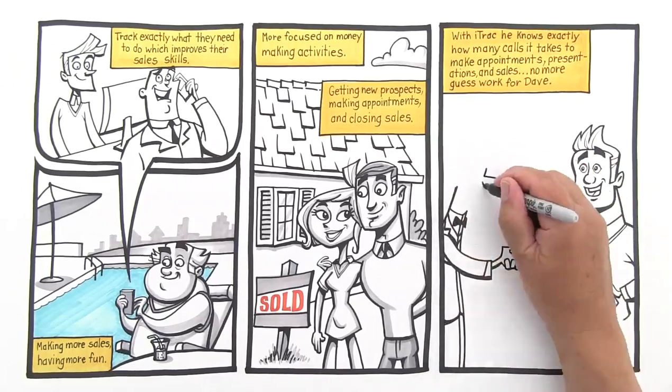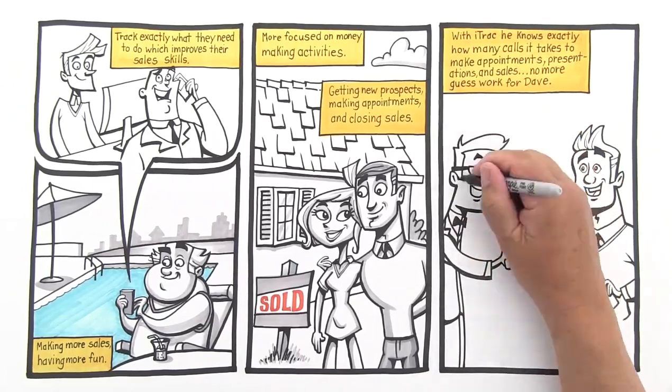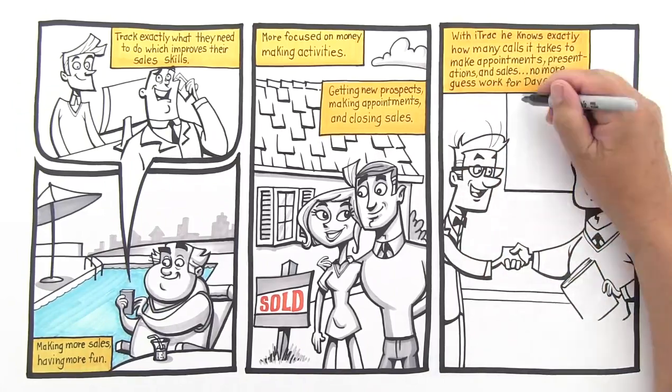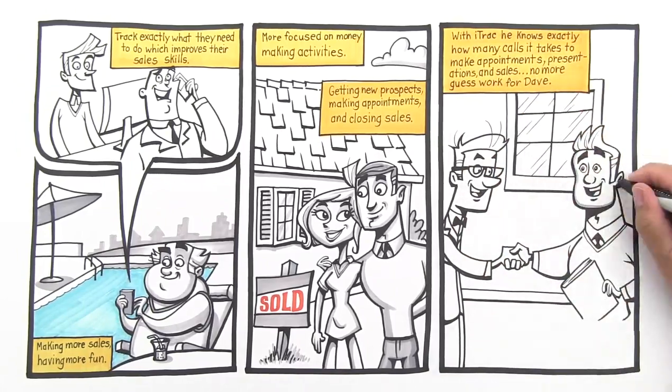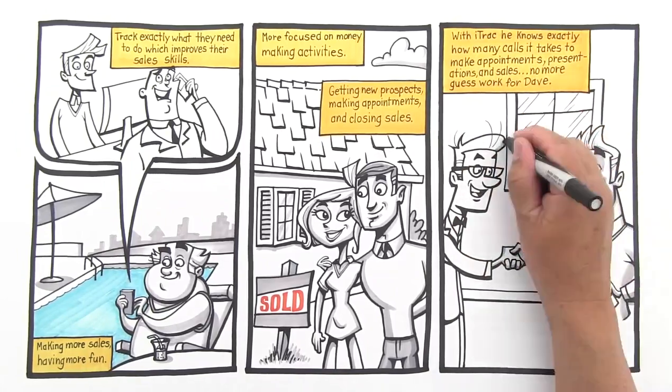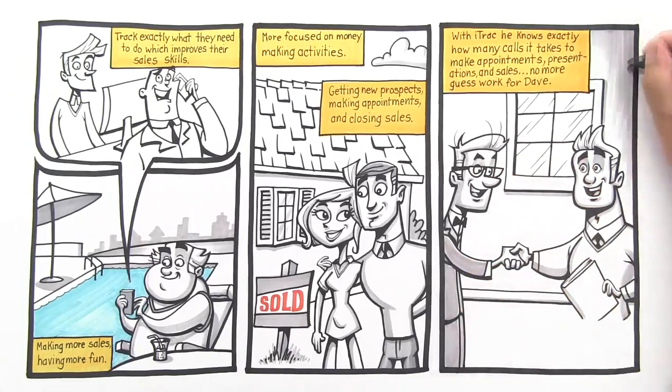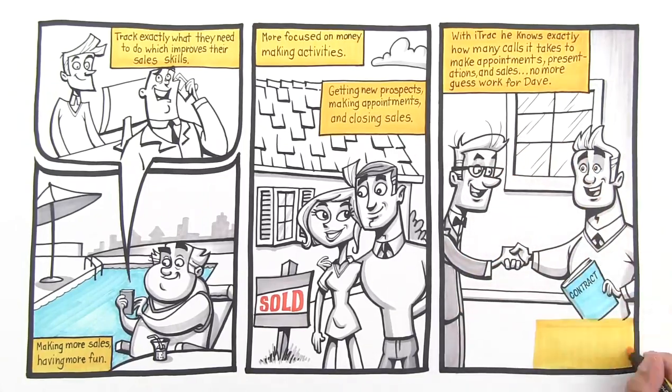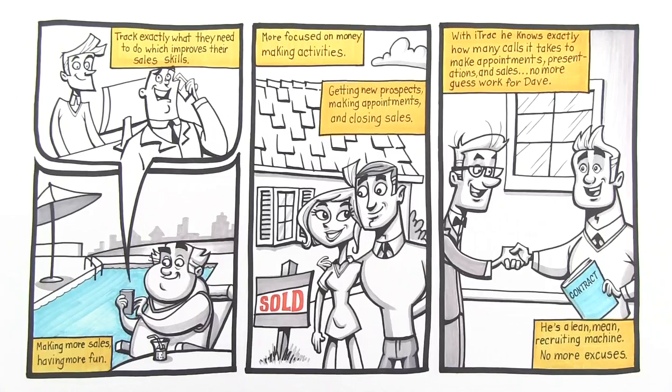He is fired up also because iTrack helped him clean all of those business cards off his desk. Dave has the fastest growing downline in his company. The money is flowing and Dave's team is growing. He is now a lean, mean recruiting machine. No more excuses. Oh yeah, he bought that new house, new car and new dog for the kids.